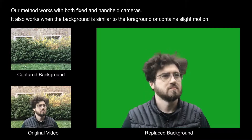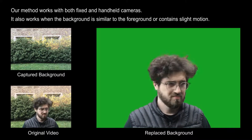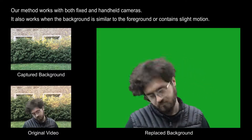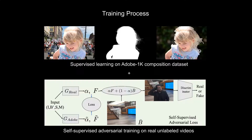Our method even works well when the foreground is similar to the background or when the background contains slight movements. However, our method fails when the background contains extreme movements. We train a fully supervised network on 300 labeled images from the Adobe dataset, followed by self-supervised adversarial training on real unlabeled videos.